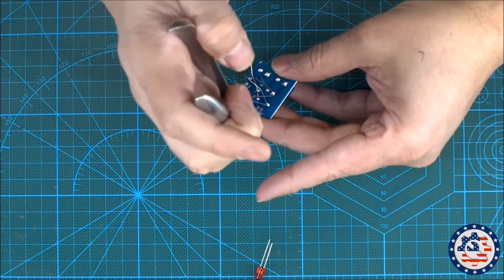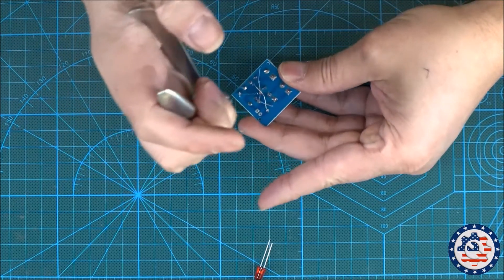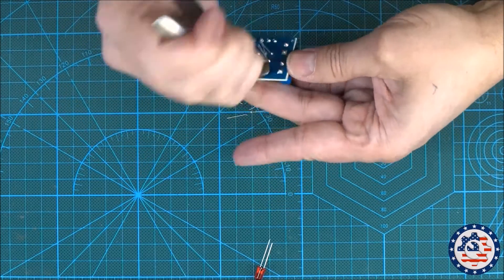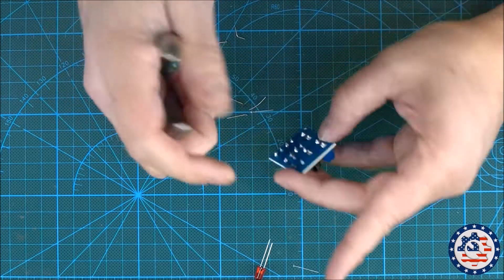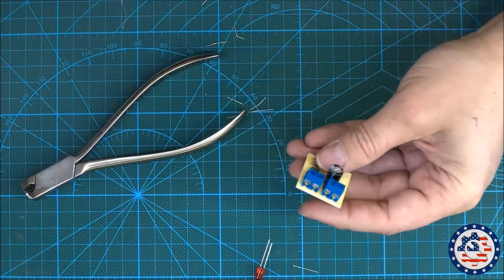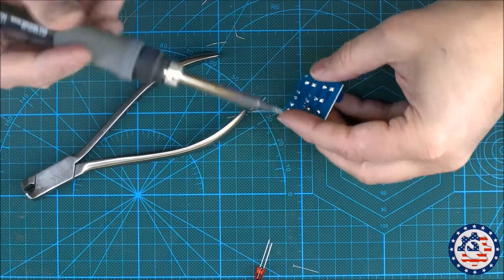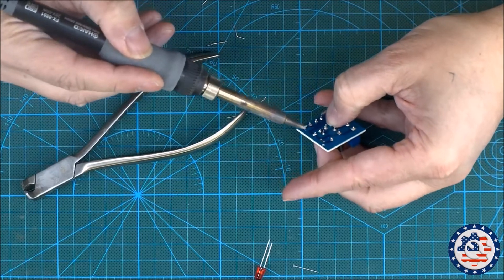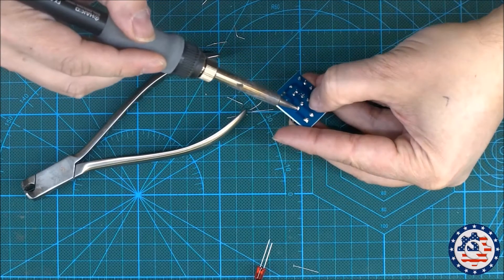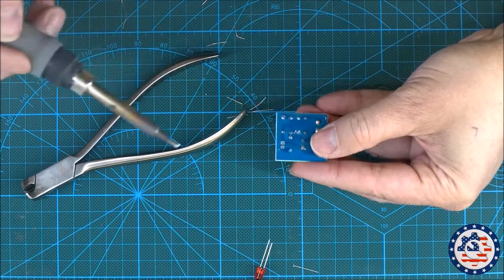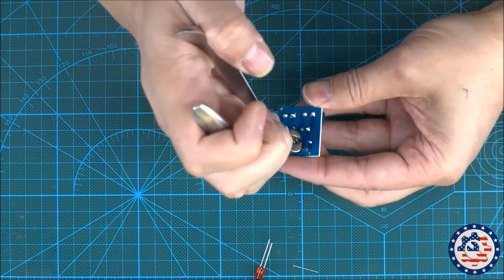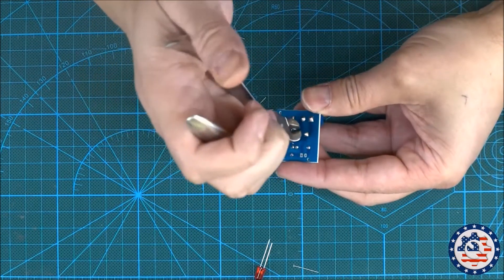Let's trim these wires. Now that everything is trimmed I'm gonna just touch up all the solder joints and trim everything a little bit more as needed.